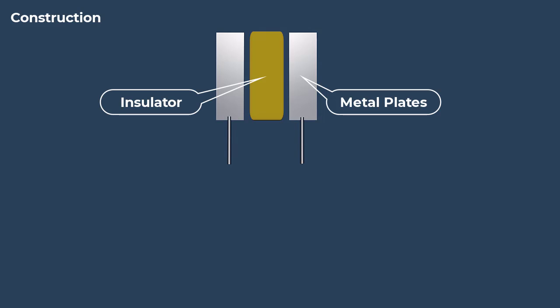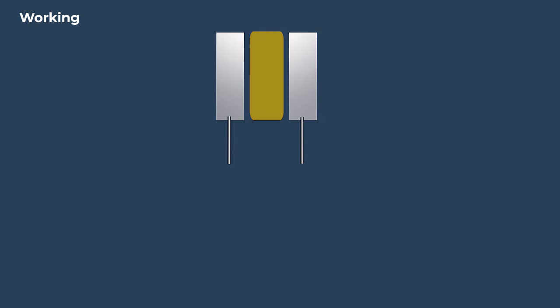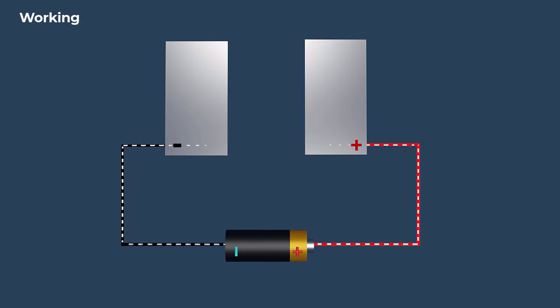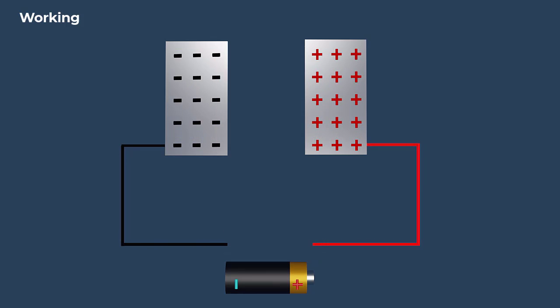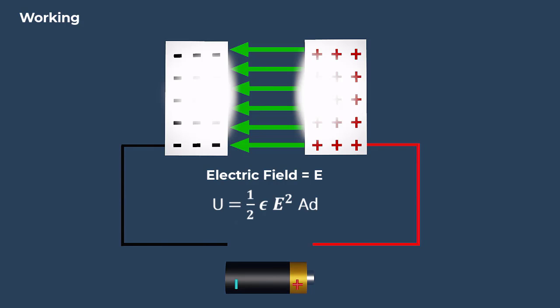A capacitor consists of two conductive plates, separated by an insulating material, known as a dielectric. When connected to a voltage source, positive charges accumulate on one plate, while negative charges accumulate on the other. This accumulation of charges represents the stored electrical energy in a capacitor. Charges create an electric field between the plates, allowing the capacitor to store energy in this field.